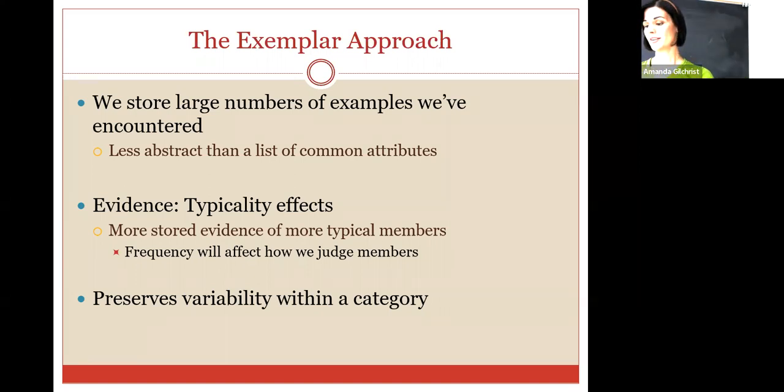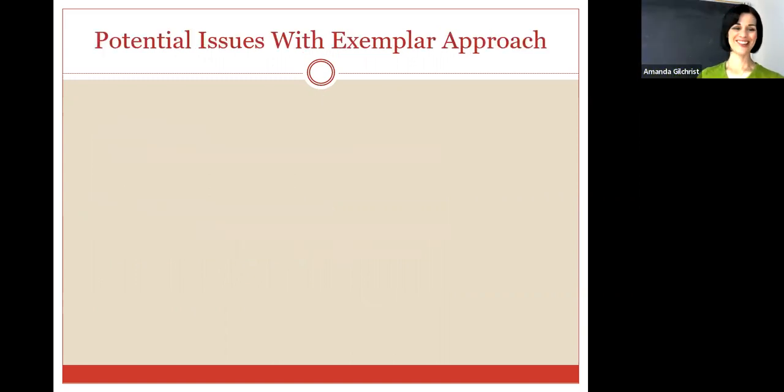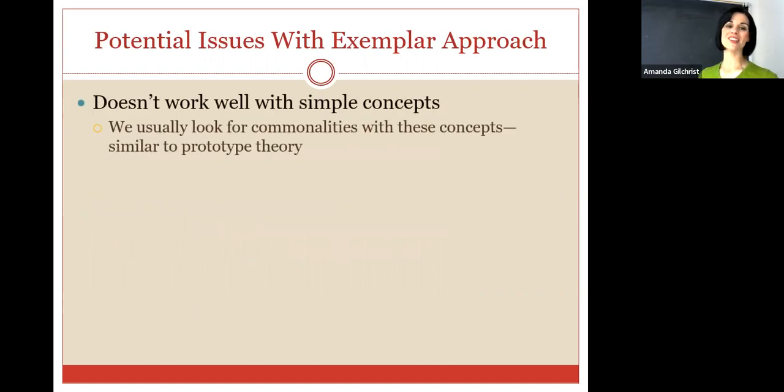Any questions? Lauren, do you need a little more time? It's cool. I can probably stand to have some more water. Now I'm going to take this Evian bottle and fill it with tap water. Now let's talk a little bit about some of the issues with the exemplar approach. So this works well for complex concepts like dog, fruit, birthday presents, et cetera, but it's not really going to work well with simple concepts. Circle. A circle is a very simple concept. A rectangle is a very simple concept. And because of that, we're not necessarily going to need to have all stored instances of circles. Y'all, you know it when you see it. So oftentimes we're going to look for commonalities with these concepts. So it's going to basically revert back to prototype theory for complex concepts. We're going to rely on the exemplar approach.